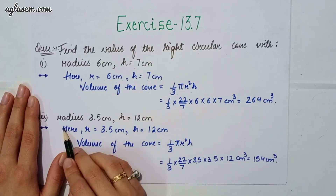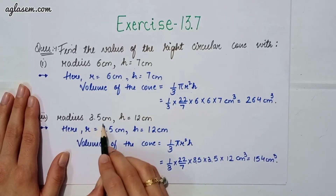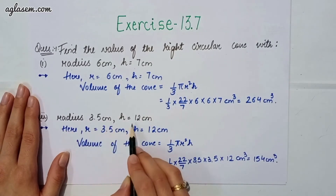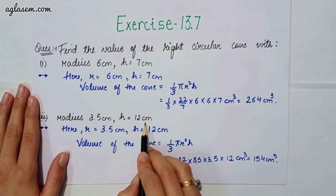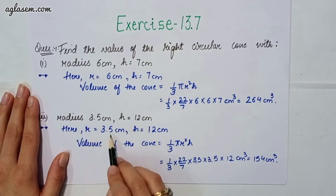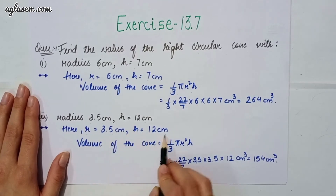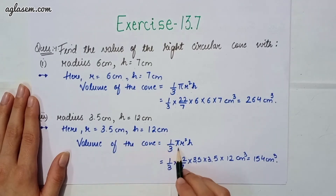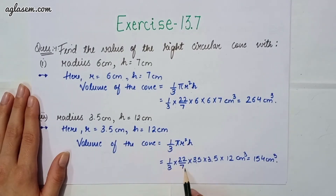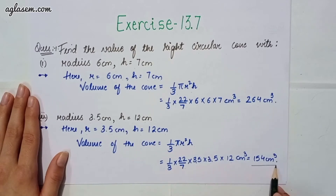The 2nd part says: find the volume of a right circular cone with radius 3.5 cm and height 12 cm. Radius is given and height is also given. Volume of cone — same formula: 1/3 × π × r² × h = 1/3 × 22/7 × 3.5 × 3.5 × 12, which gives you 154 cm³.